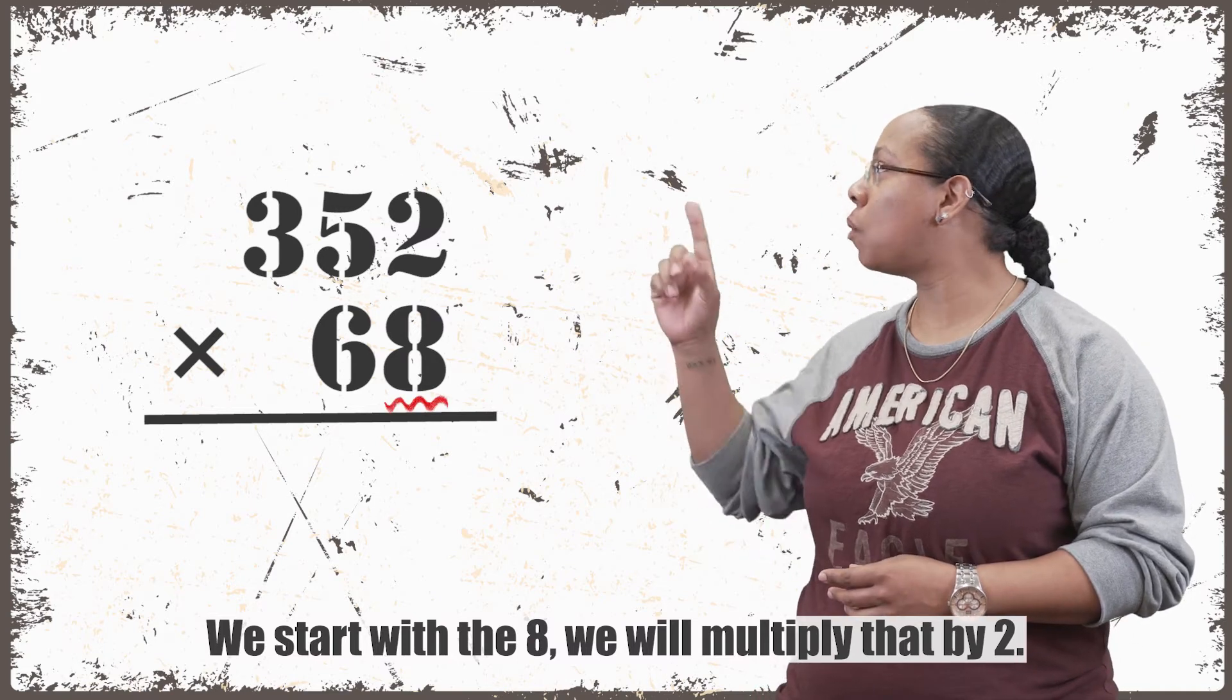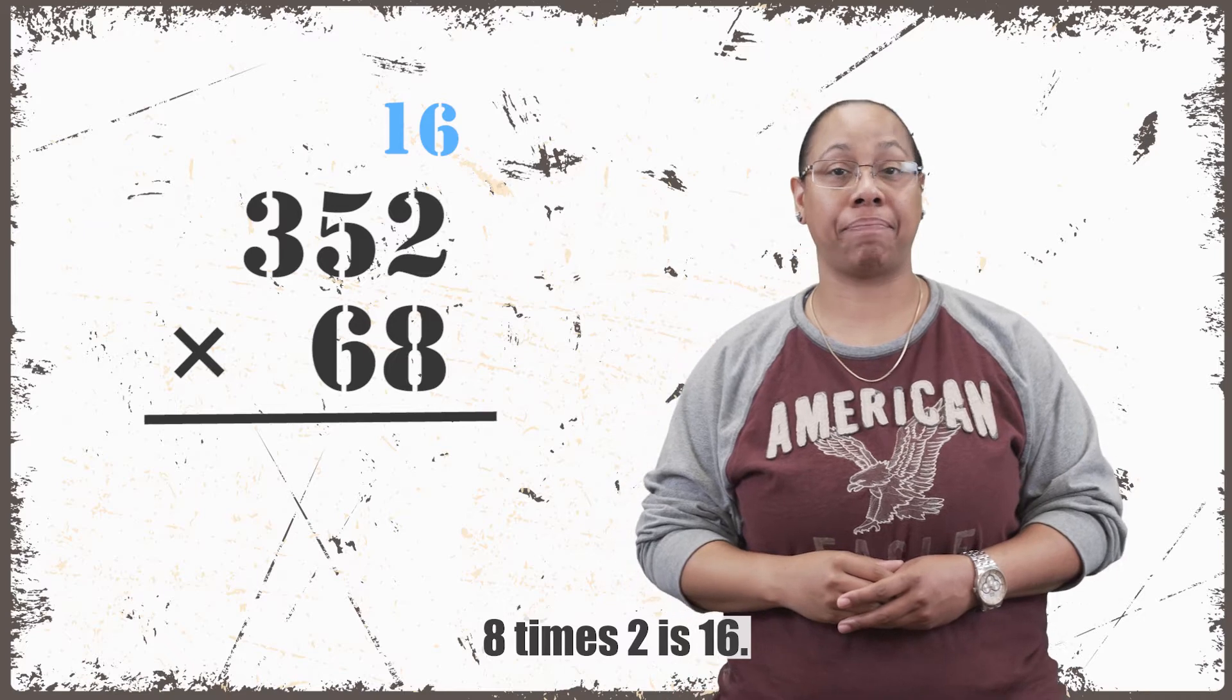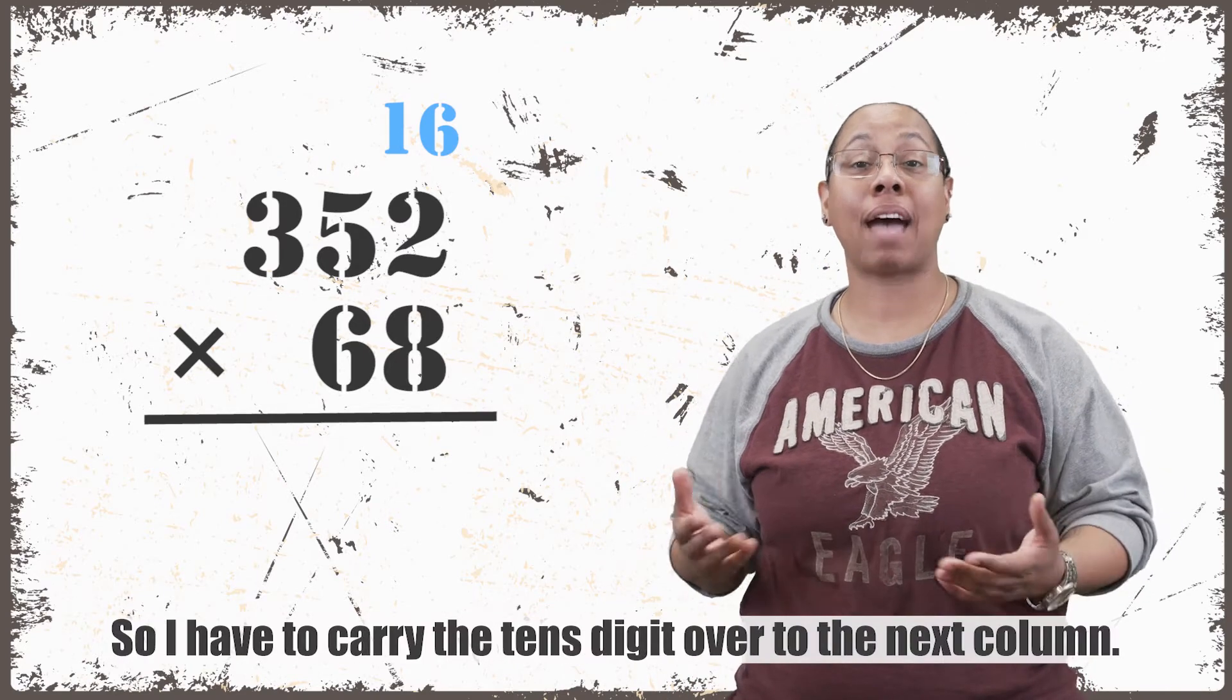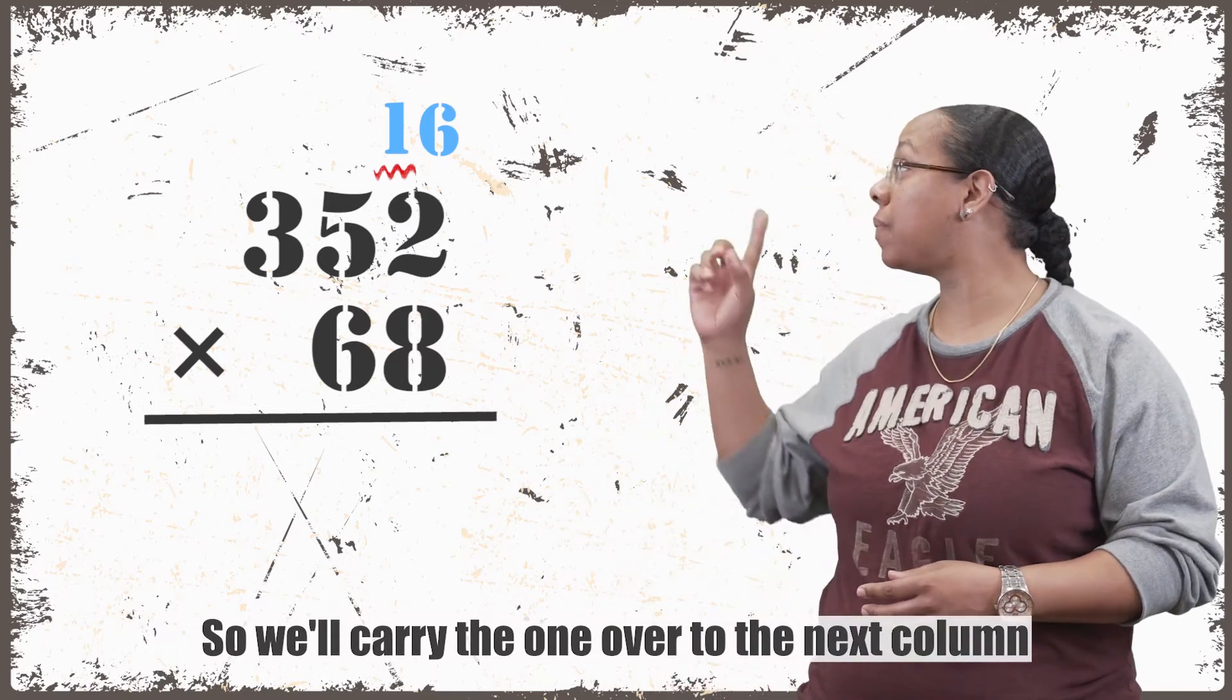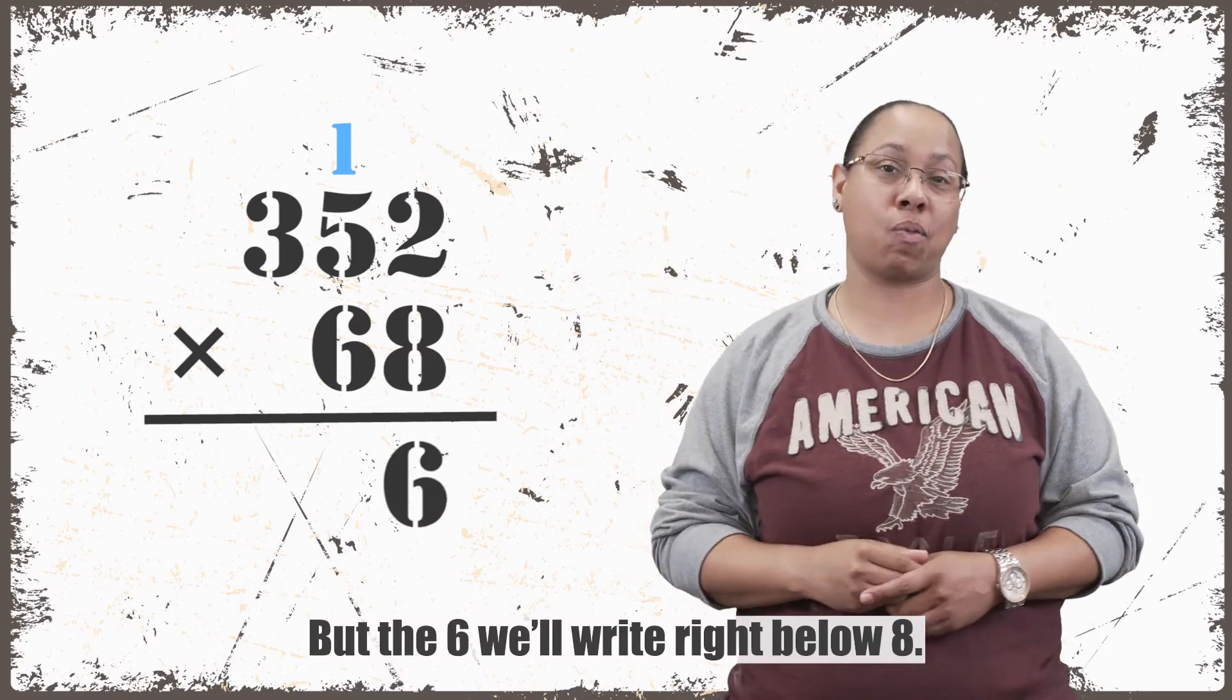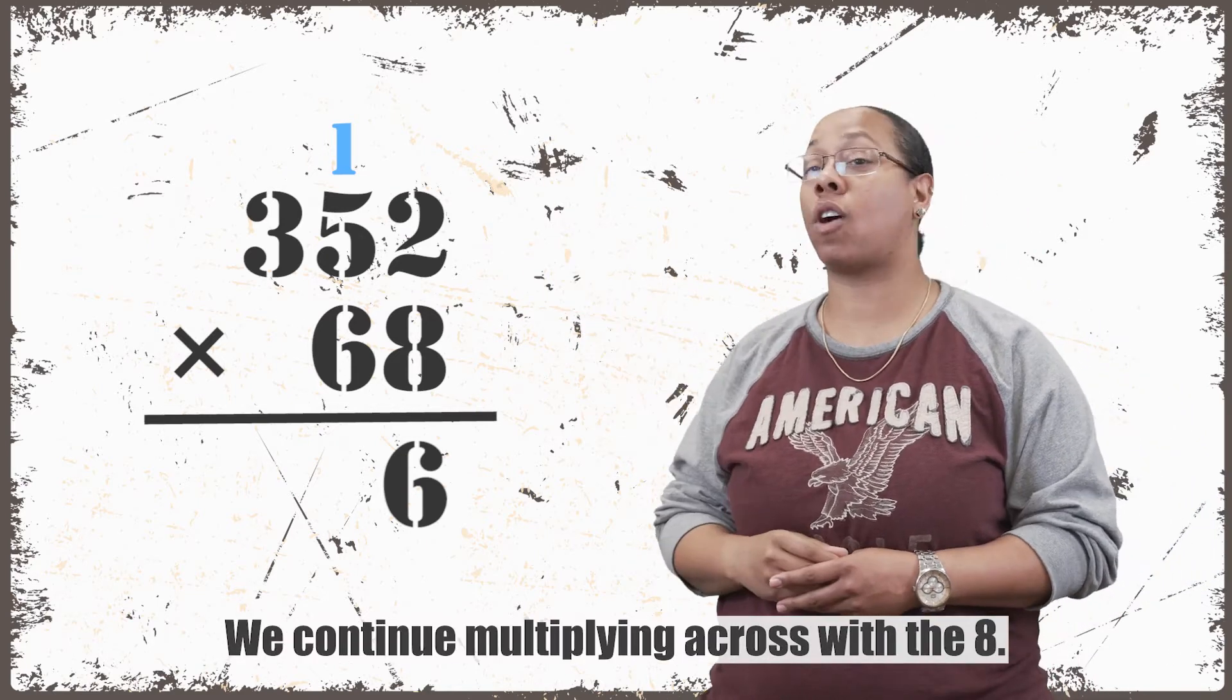We start with the 8. We'll multiply that by 2. 8 times 2 is 16. I can't write that whole 16 down below, so I have to carry the tens digit over to the next column. So we'll carry the 1 over to the next column and write it above the 5. But the 6, we'll write right below the 8.